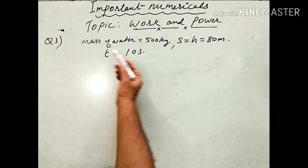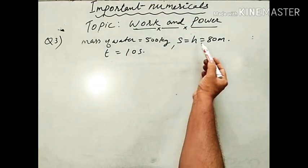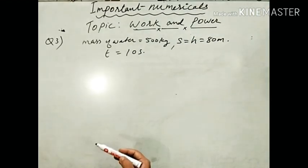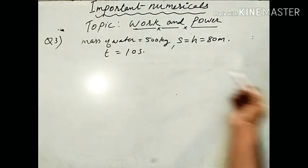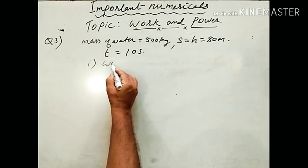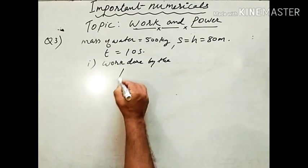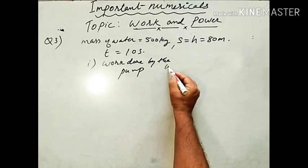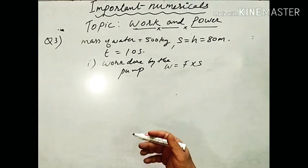Given: mass of water = 500 kilogram, depth S = H = 80 meter, time = 10 seconds. The pump is drawing water from the well, doing work against the force of gravity.